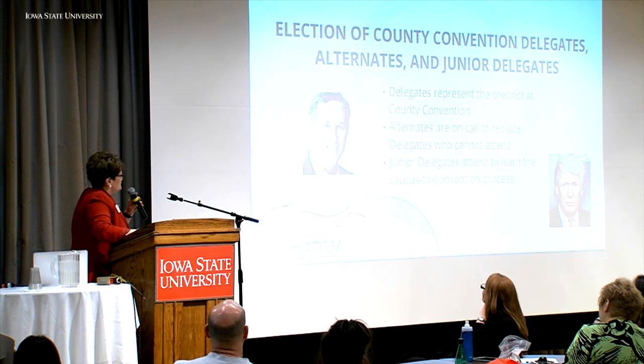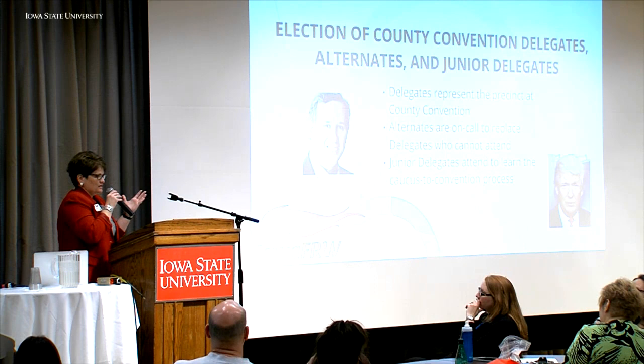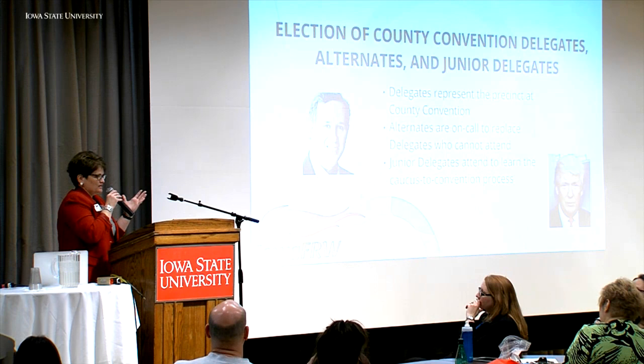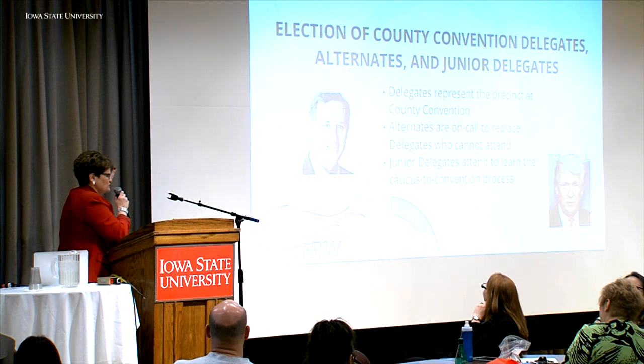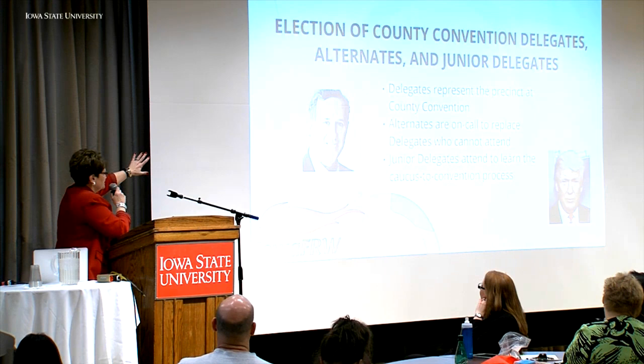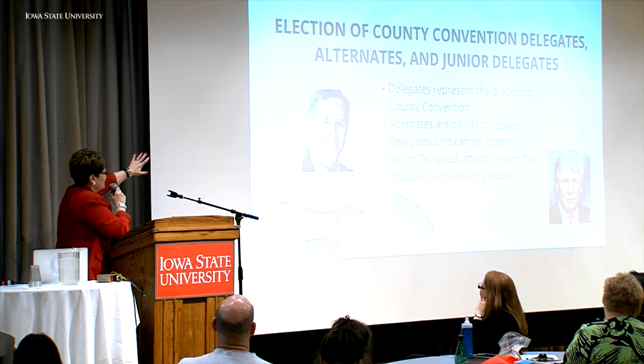The next thing we do is elect county convention delegates, alternates, and junior delegates. The delegates represent the precinct at the county convention, and this matters — you'll never be a national convention delegate if you don't start here. It's called the caucus-to-convention process on purpose. You have to start at your caucus, work to the county, work to the district, work to the state, and then run at the state to try to be a national delegate.